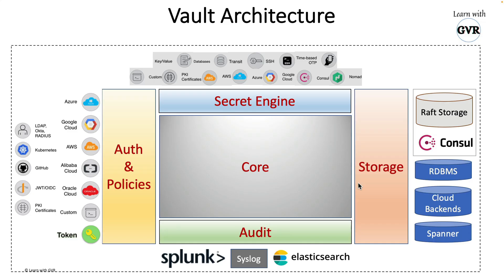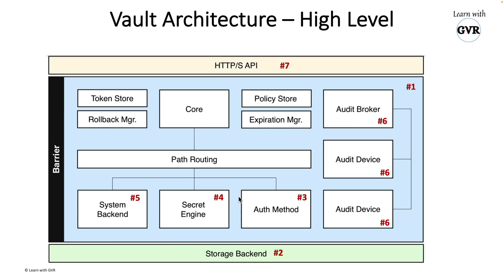In the previous sessions we understood the Vault high-level architecture. Today's topic is the audit device. There are three components: the audit device, the audit broker, and a third component. The audit broker is an internal component — nobody will ask about it in the exam, but for knowledge purposes, Vault has an internal broker that takes care of routing audit data.